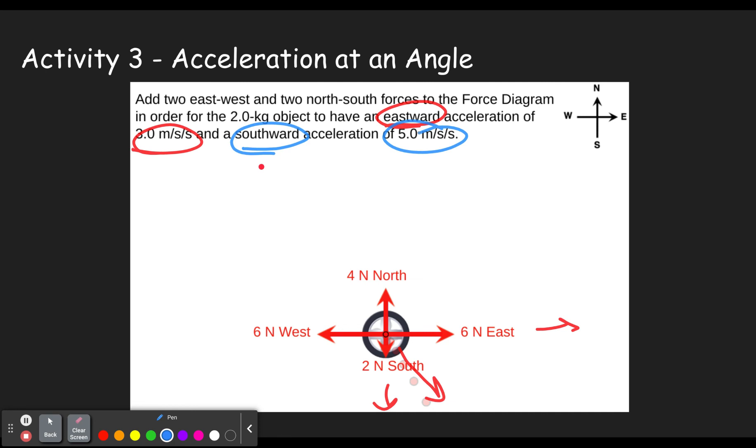I'm not going to go through all the steps because we just did that in the last problem. But we see that we have a two kilogram object. So eastward, actually, let me write that over here. So my eastward direction, I'm going to have two kilograms times three meters per second squared. So that means we're going to need six newtons of force, net force in the eastward direction.